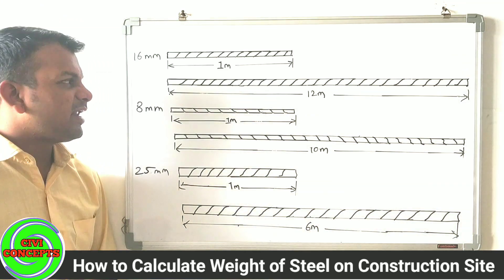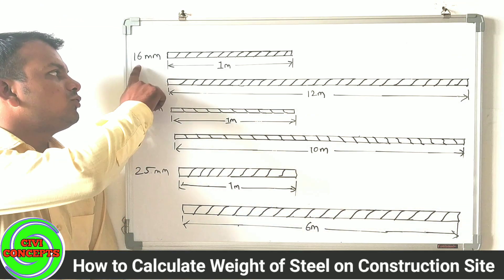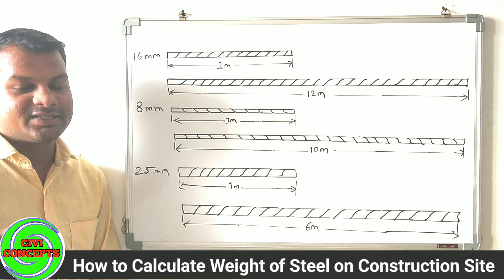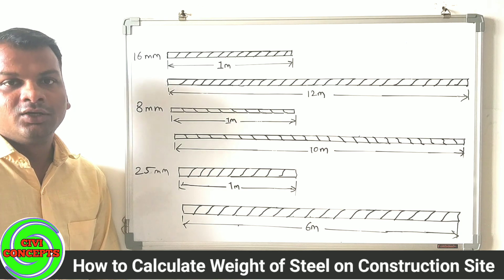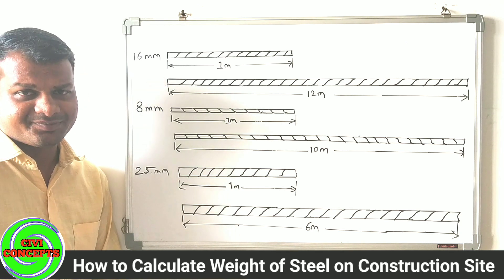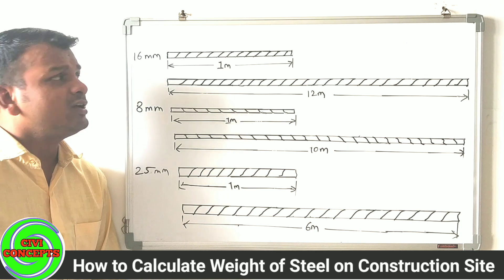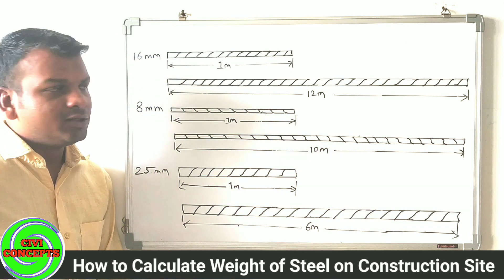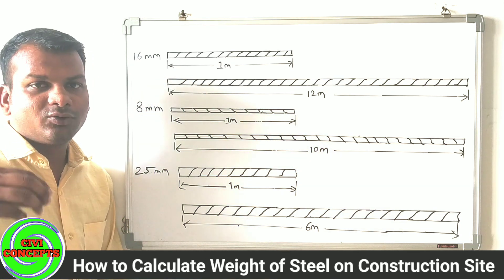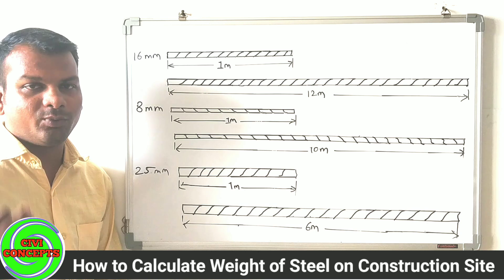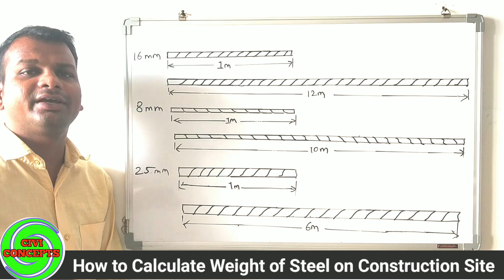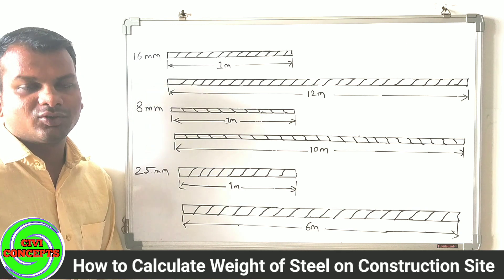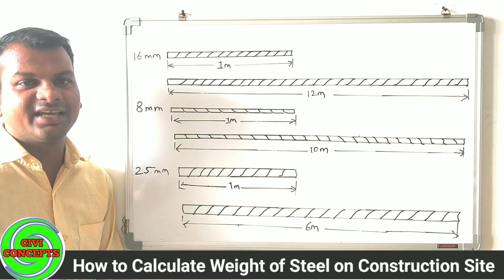So let's start. First, take the diameter — which is 16mm. If we use a 16mm bar, I will tell you two methods to find the weight: a formula method and a regular step-by-step method.